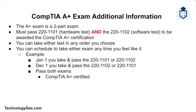The CompTIA A-Plus certification is a two-part exam. You must pass both the 220-1101, which is the hardware test, and the 220-1102, which is the software test, in order to be awarded the CompTIA A-Plus certification. You can take either test in any order and schedule the exams days, weeks, or months apart. For example, you could take the 220-1101 on January 1st and the 220-1102 on December 1st of the same year. As long as you pass both exams, you will be awarded the certification, which goes into effect the day you pass the second exam.